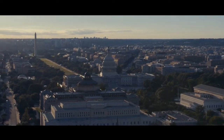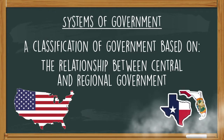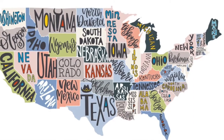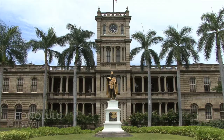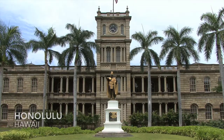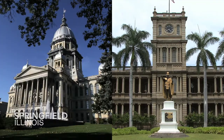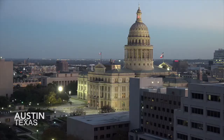But that's not the only government that a country has. Many countries are divided into regions, sometimes called states or provinces or even zones. Each of these regions is going to have their own government, and we call these regional governments.